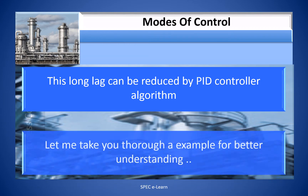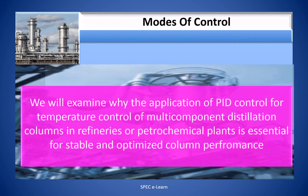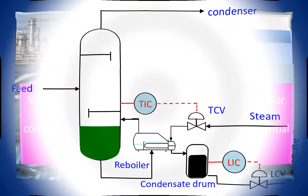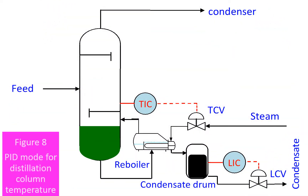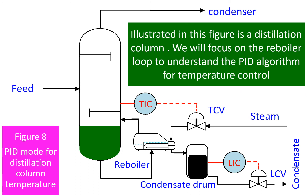Now let me take you through an example for better understanding. We will examine why the application of PID control for temperature control of multi-component distillation columns in refineries or petrochemical plants is essential for stable and optimized column performance. Illustrated in this figure is a distillation column — we will focus on the reboiler loop to understand the PID algorithm for temperature control.